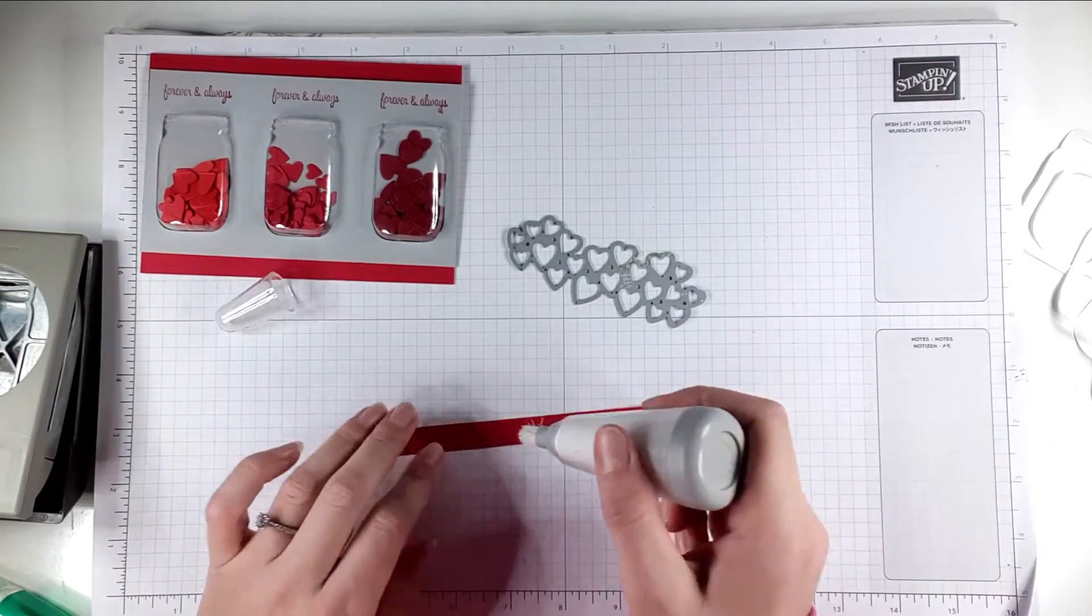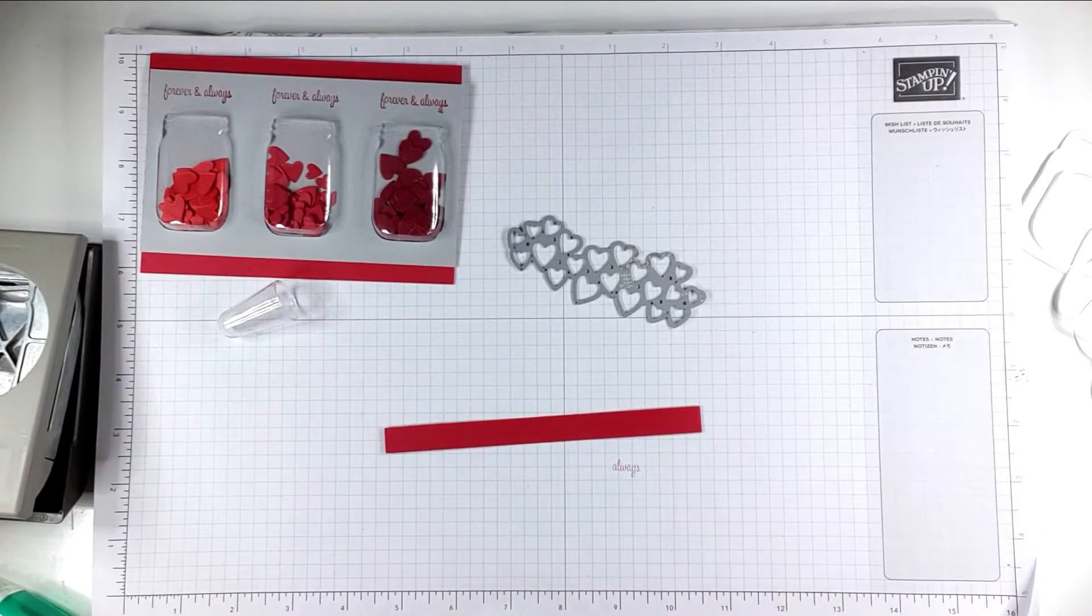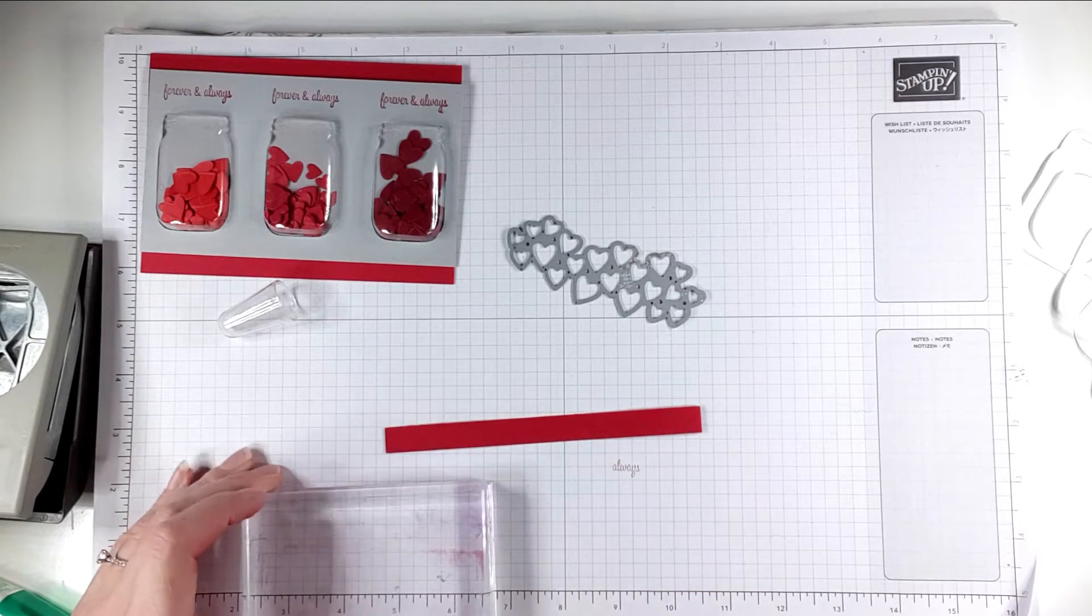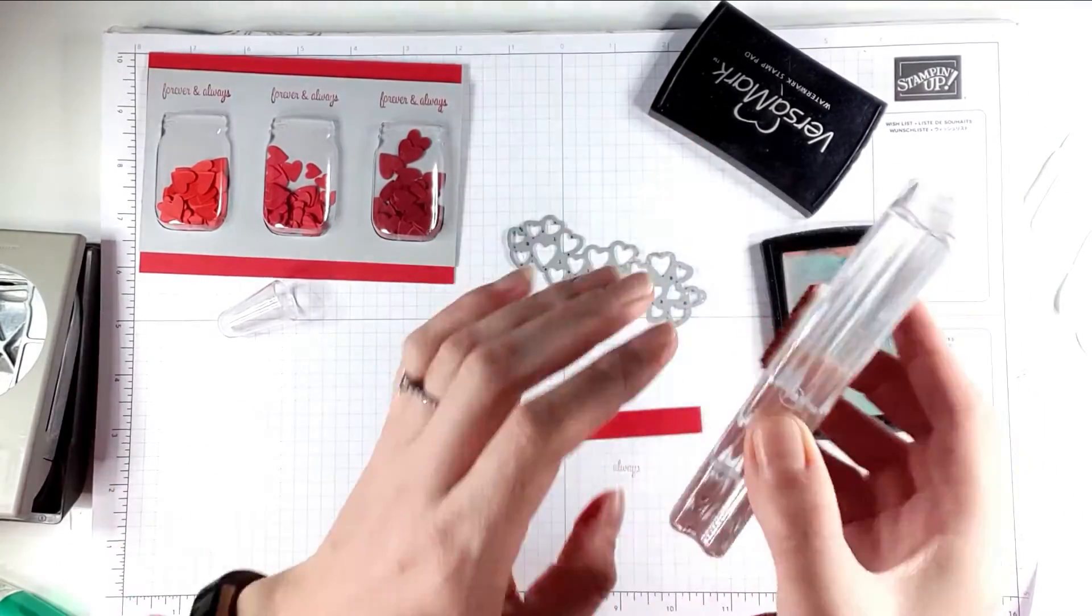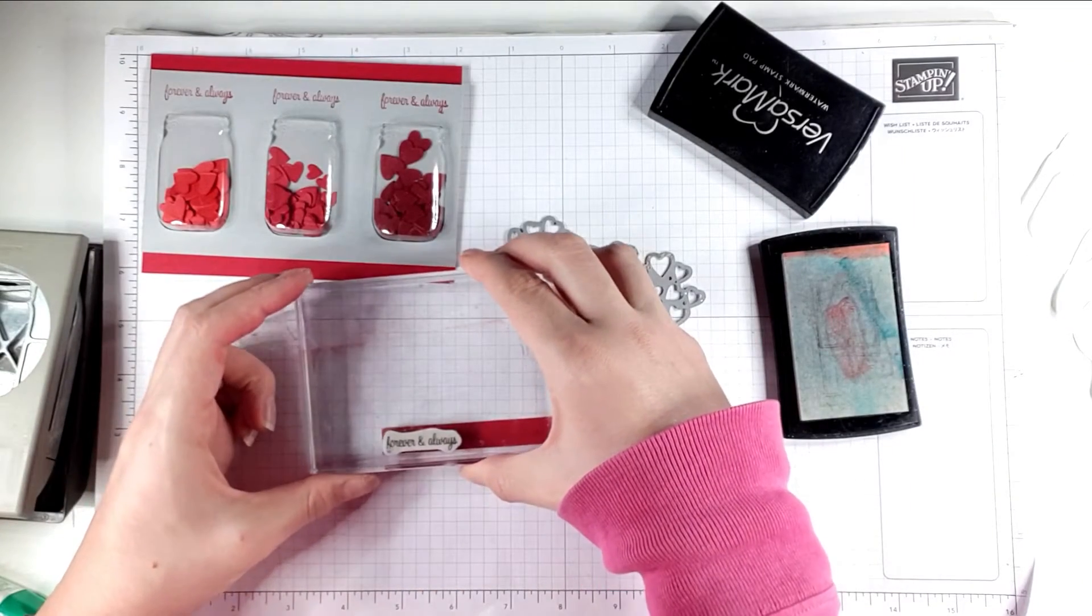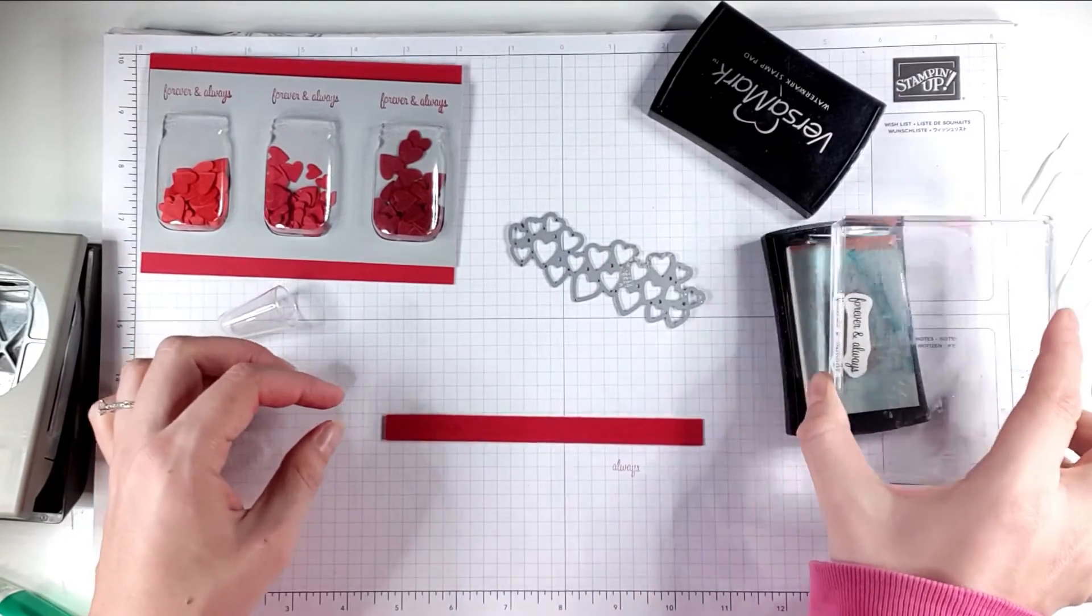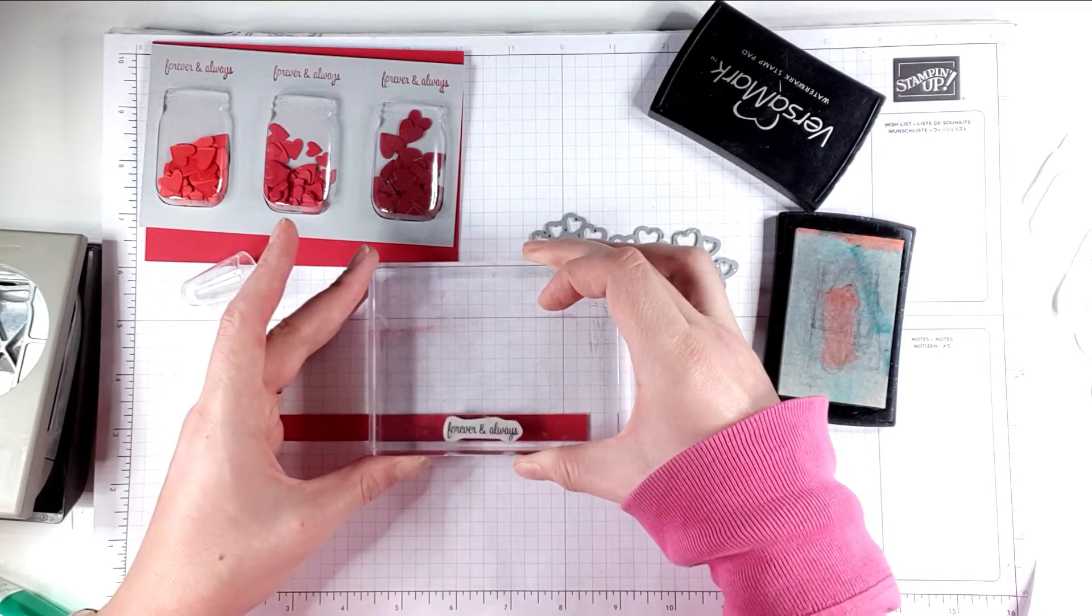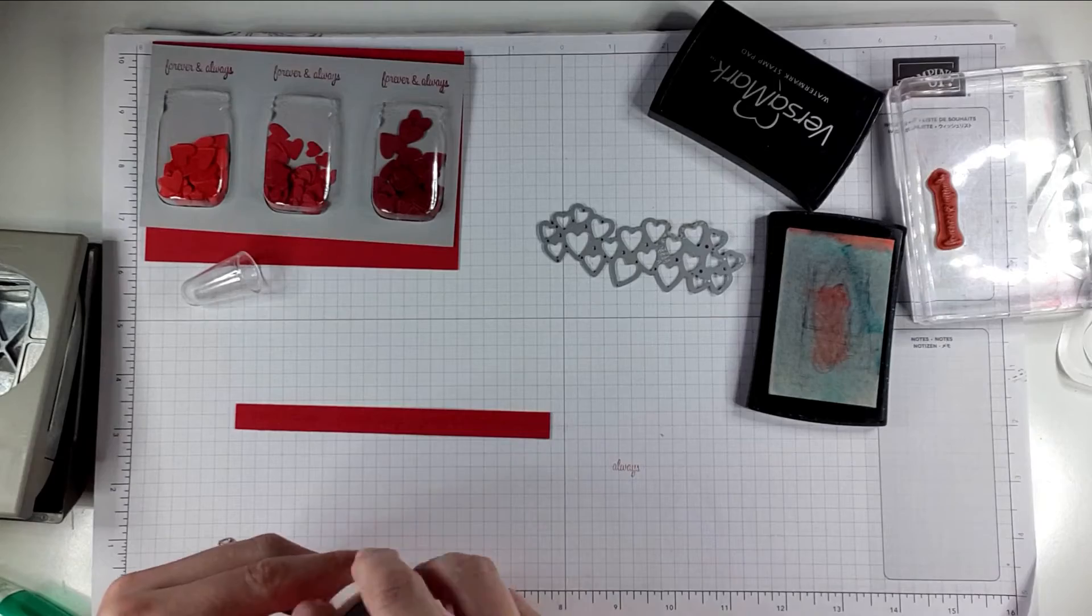I've come up with a little fix for it because I feel like there's always or almost always a way to fix things. What I'm going to do is use the same forever and always stamp on this little bit of real red cardstock. I've got my Versamark ink and I'm just going to stamp forever and always along this red cardstock. Then I'm going to pour over some white embossing powder.